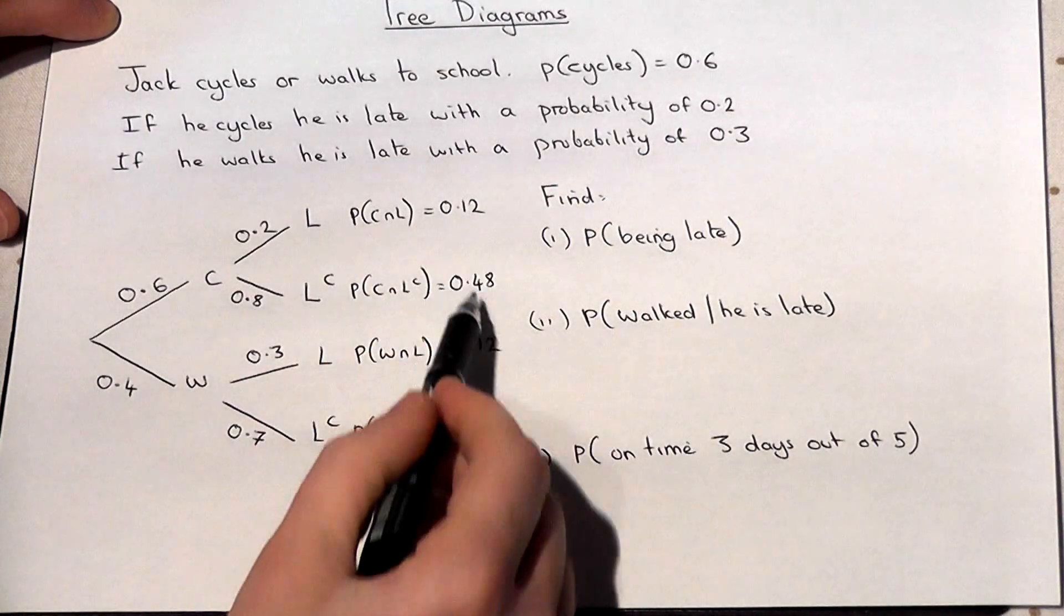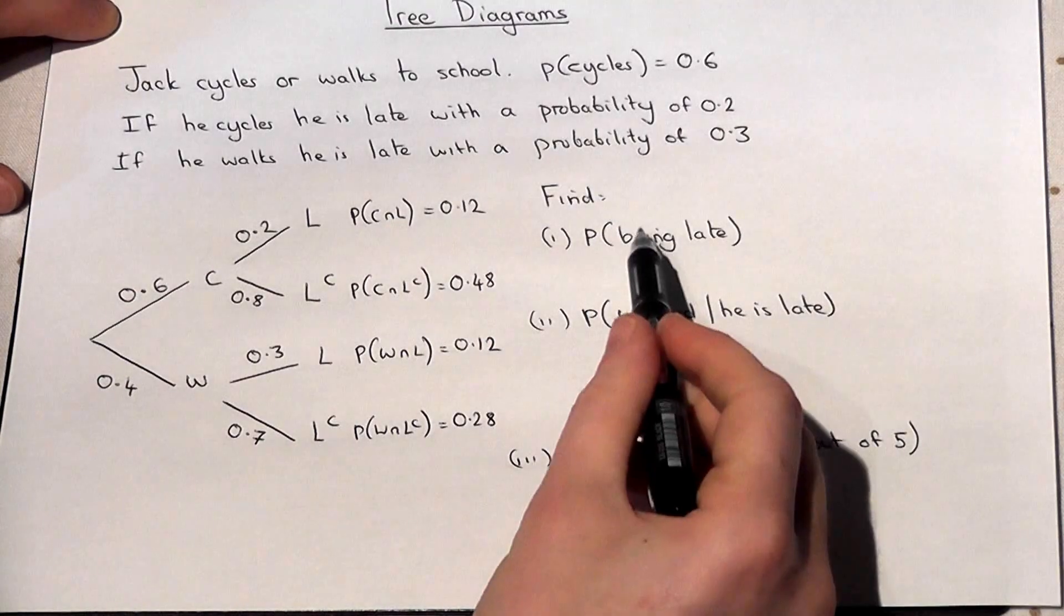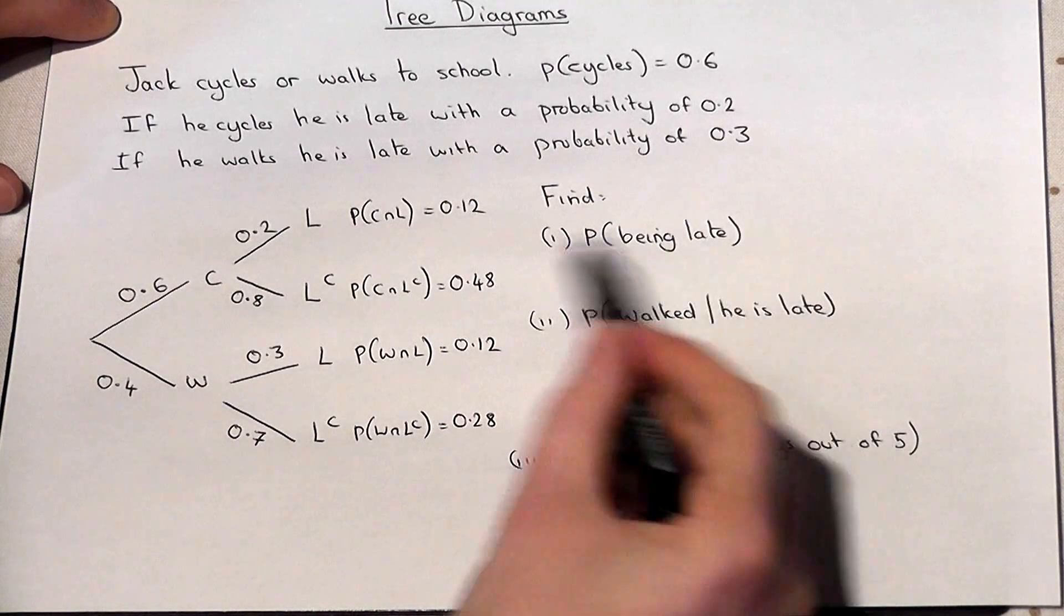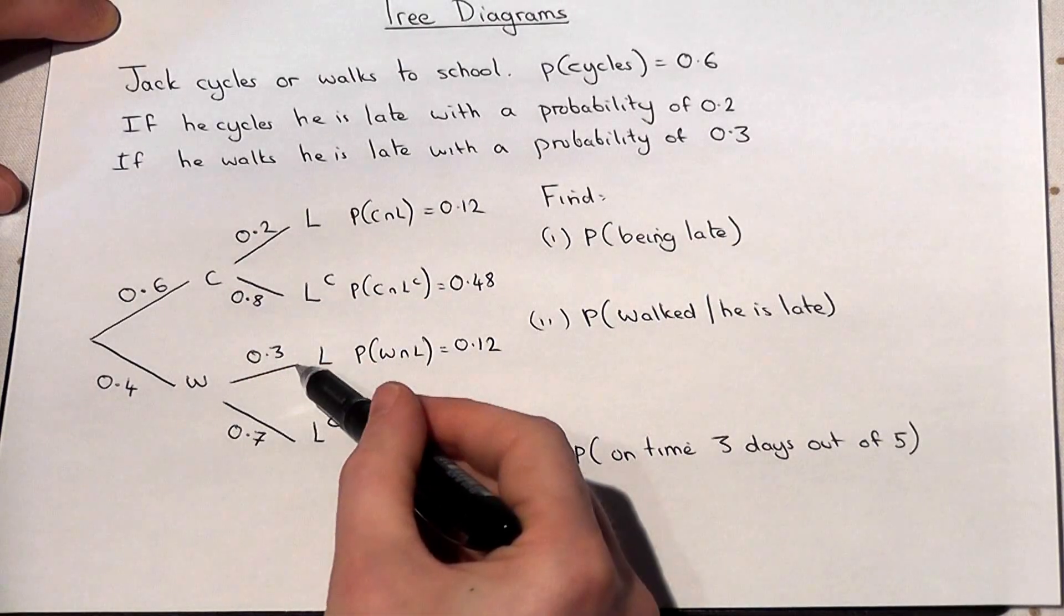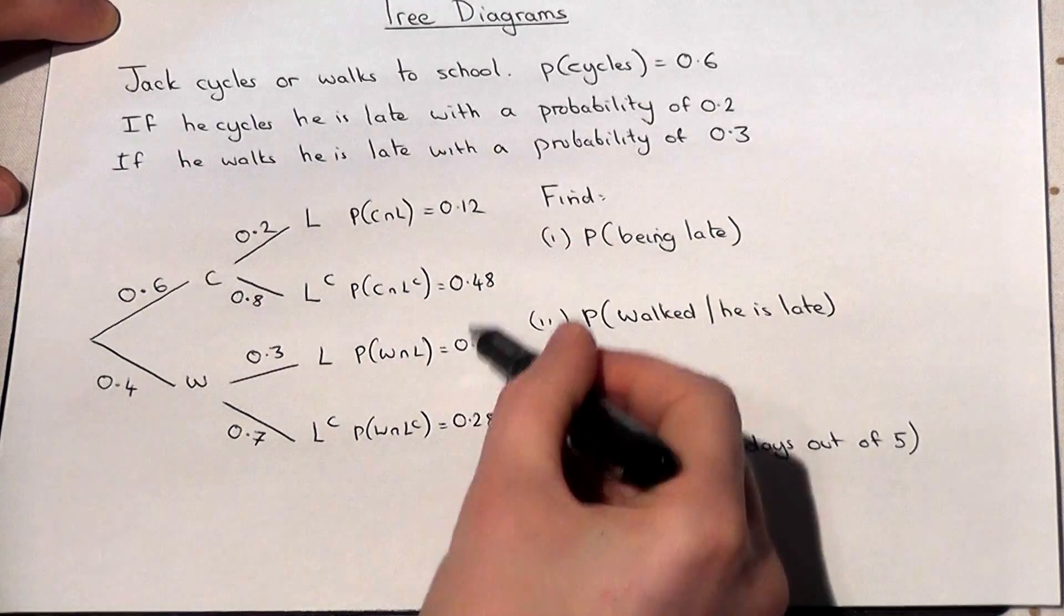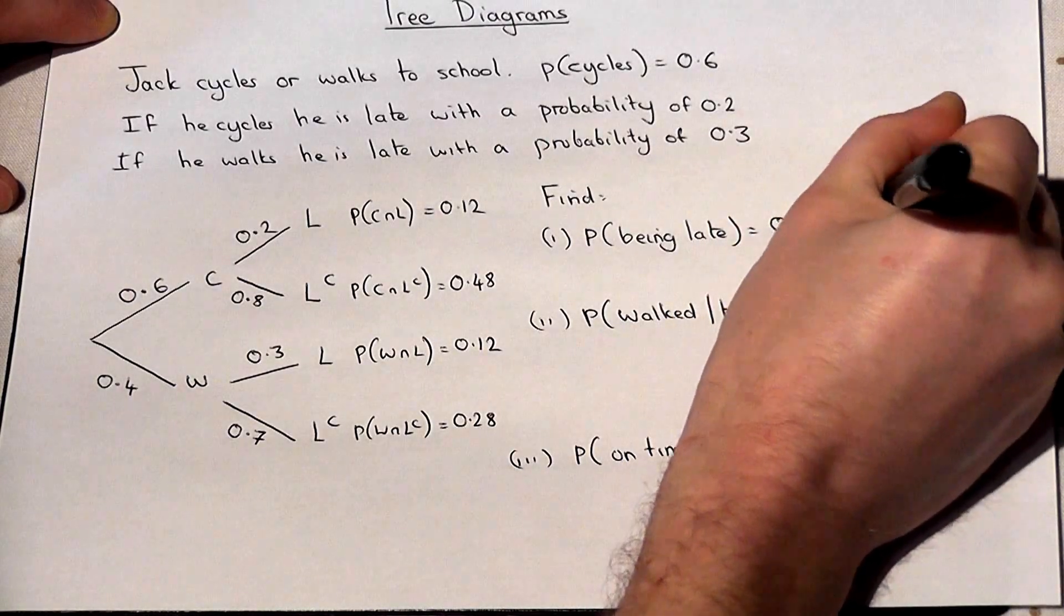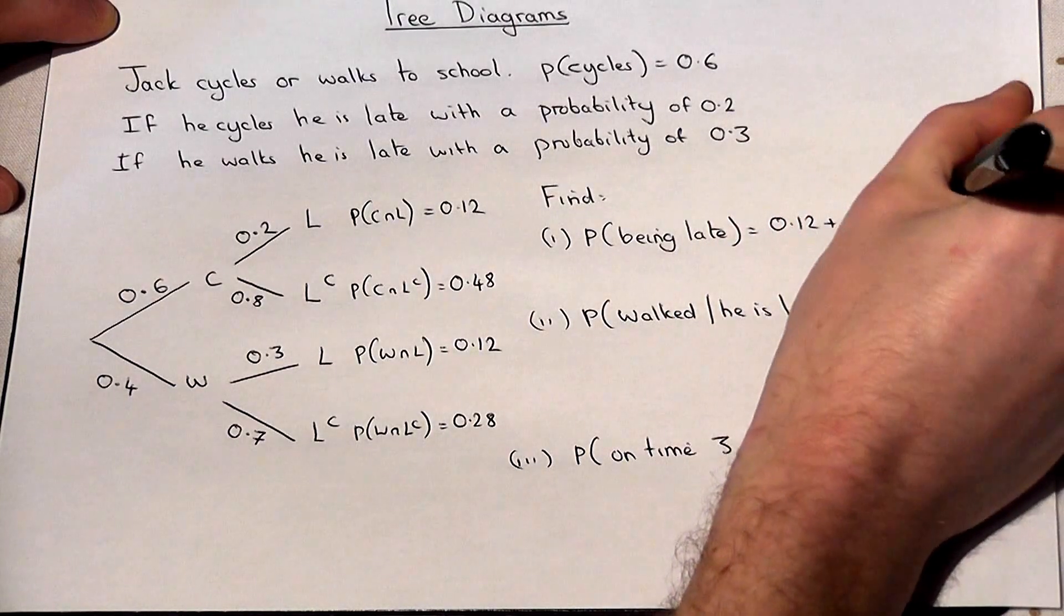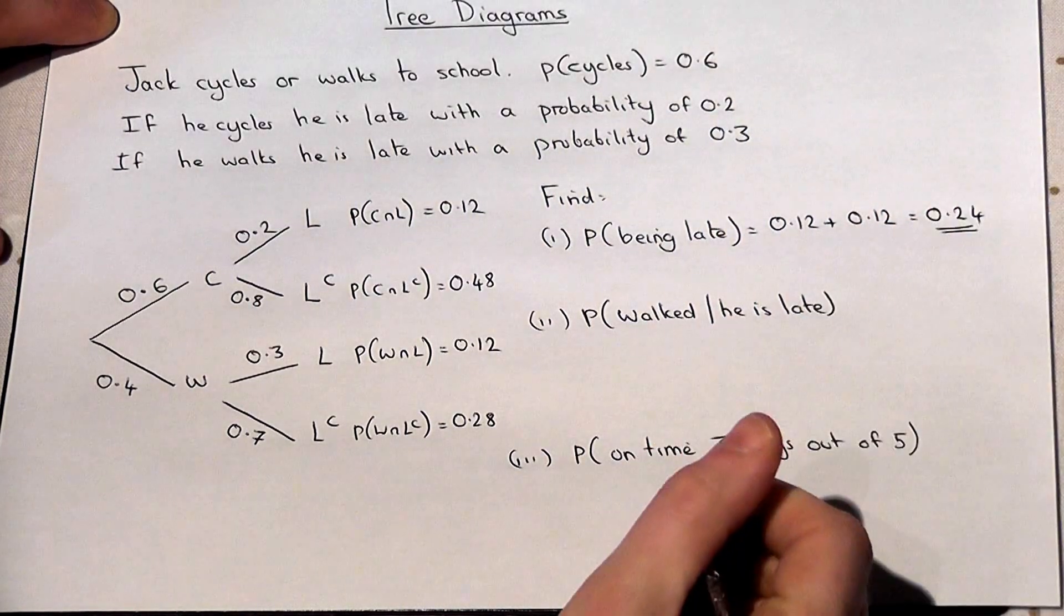We then use these calculations to answer three questions. So the chance of being late, there are two options: either late having cycled or late having walked. So there's two options. So all we do is we add together the two possibilities to get 0.24. A nice simple start.